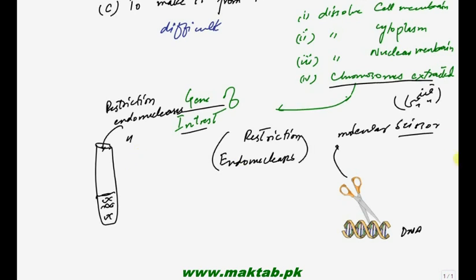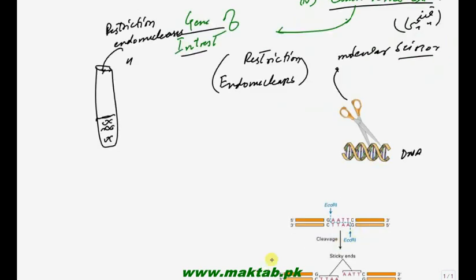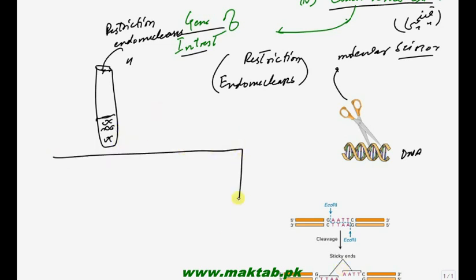EcoR1 का diagram: यह DNA का portion है 5' to 3' और 3' to 5' - double stranded। इसमें AATT और TTAA palindromic sequences होते हैं जो reverse order में पढ़े जाते हैं। Restriction endonucleases की history: यह basically bacteria बनाता है bacterial defense के लिए - against viruses।